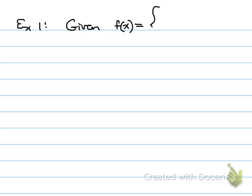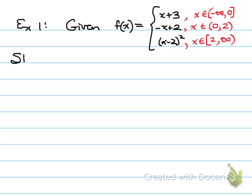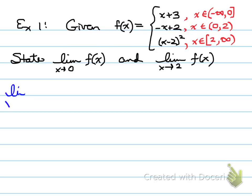Example 1: given f(x) as a piecewise function with all values provided, we are asked to state the limit as x approaches 0 and the limit as x approaches 2. This question could also ask us to state any points of discontinuity. We need to check the boundary values to see if the function jumps or continues from where it left off. If a piece has a square bracket on one end and a round bracket on the other, there would be a solid dot on one end and an open dot on the other.